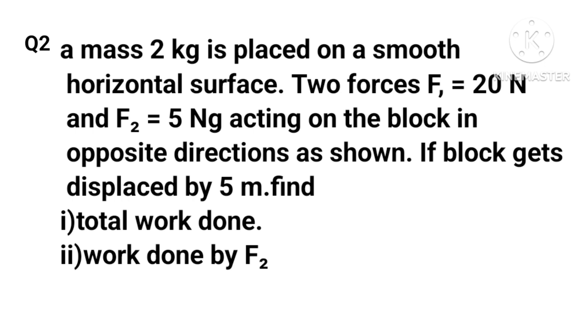A mass of 2 kg is placed on a smooth horizontal surface. Two forces F₁ = 20 N and F₂ = 5 N act on the block in opposite directions. If the block gets displaced by 5 meters, find (i) total work done, (ii) work done by force F₂.